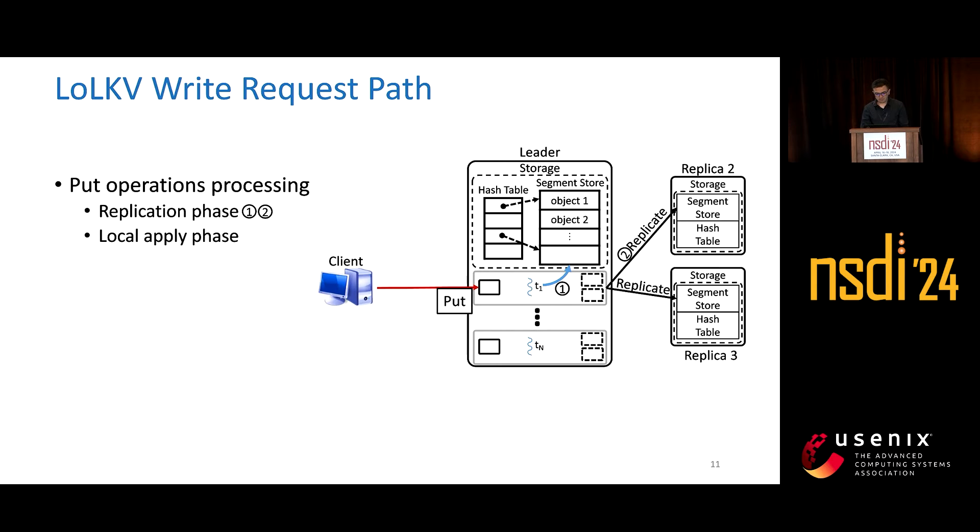Then we have the local apply phase, where the operation is applied to the hash table. Finally, we have the remote apply phase, which is where the operation is applied to the hash tables of followers.